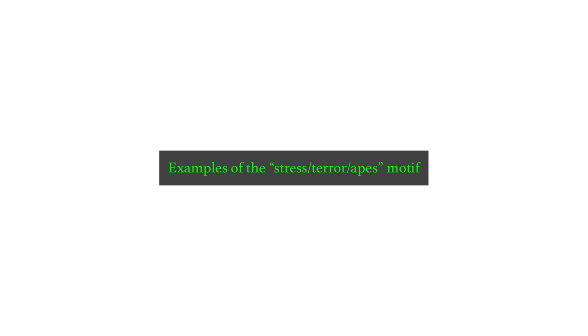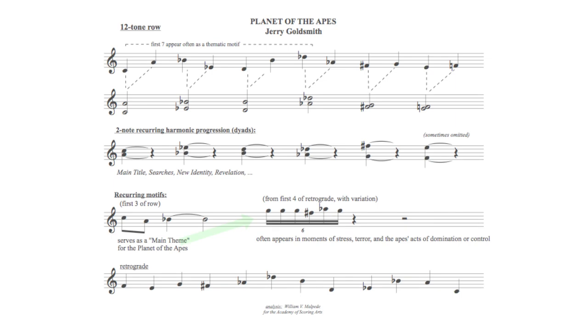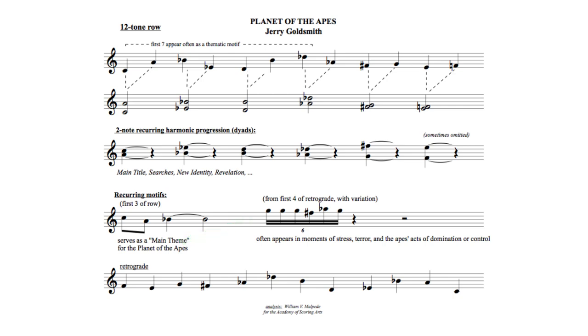The next five examples feature what I call the stress, terror, apes domination motif. It is often featured in action sequences, and I'd also like to make note of the use of the large and small friction drums, which you'll hear emulating the sound of the ape's grunts and vocalizing.